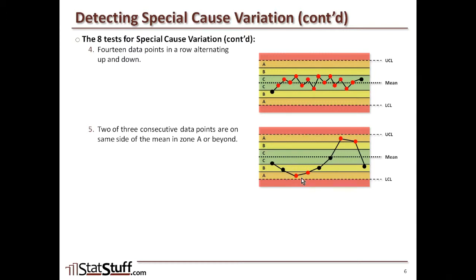When looking at any three data points, if at least two of them are falling within Zone A — or beyond — it could be indicative of some type of special cause variation that you need to explore further.